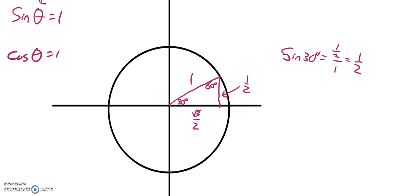And notice that cosine of 30 degrees, cosine, one way to think about cosine is adjacent over hypotenuse, root 3 over 2 over 1, which is root 3 over 2. So we know that.